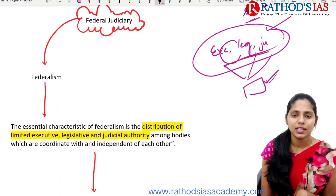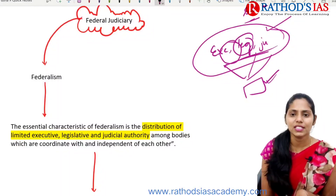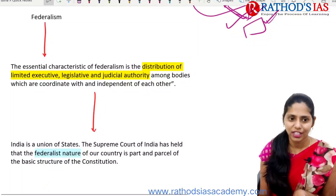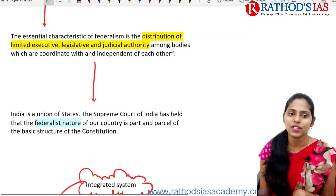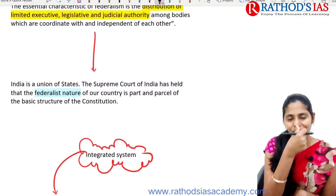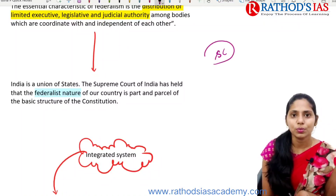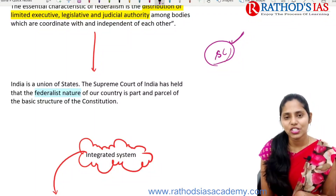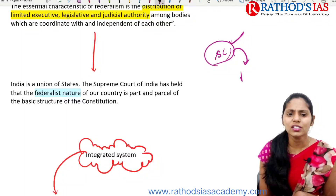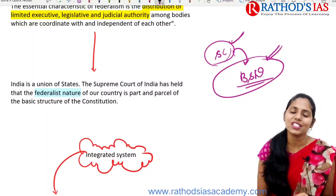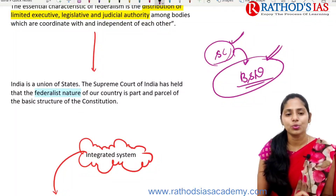We need a limited executive, limited legislature, and limited judiciary, ensuring these three bodies coordinate with and are independent of each other. India is the union of states, and the Supreme Court of India, which is the apex court, has held that the federal nature of the country is one of the basic structures of the Indian constitution. Federalism is one of the basic structures as stated by the Supreme Court itself. Regarding the judiciary system in India, it is an integrated judiciary system.